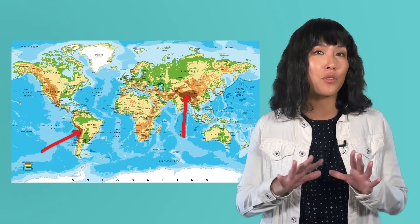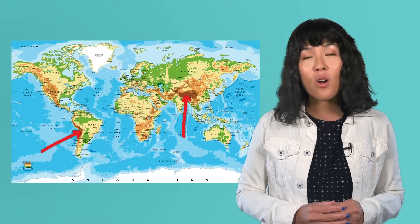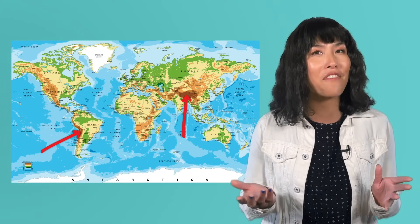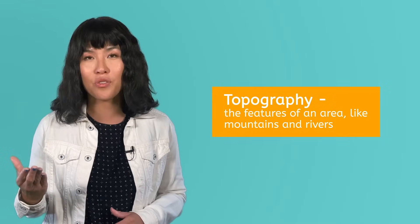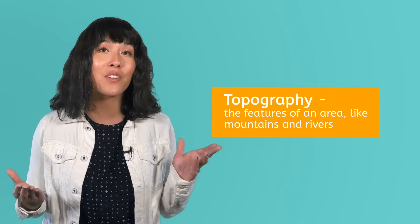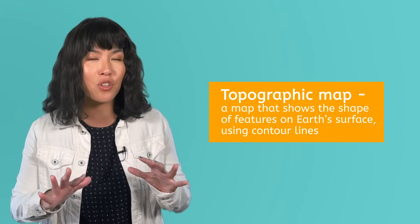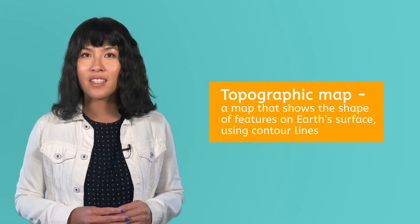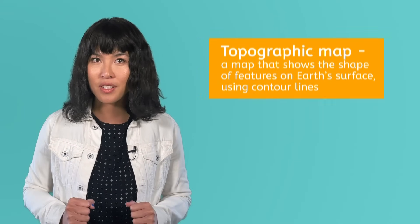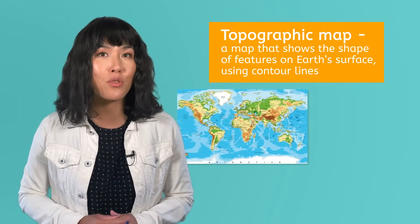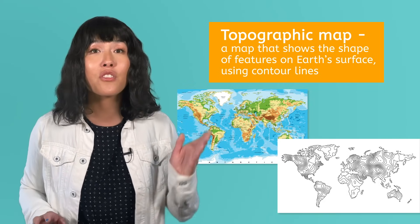Relief maps are commonly used for large areas, but to really dial into the details of a landscape, Earth scientists often use topographic maps. Topography means the features of the Earth in an area, like mountains and rivers. So a topographic map is a map that shows the shape of features on Earth's surface. While a relief map uses a gradient of colors, a topographic map uses a pattern of contour lines.